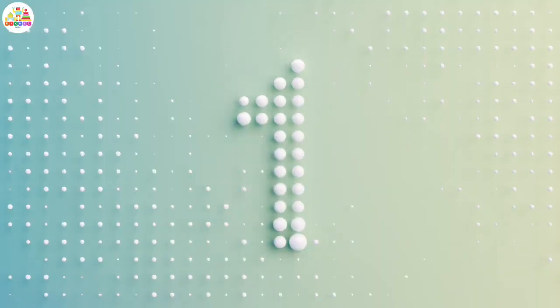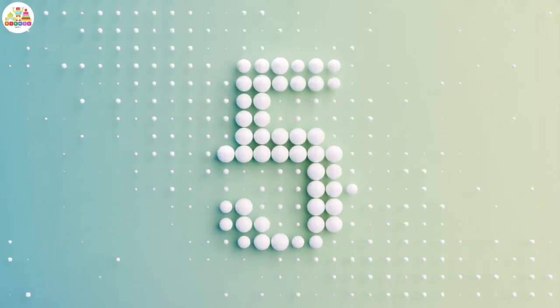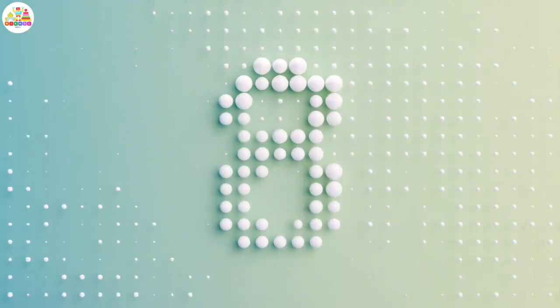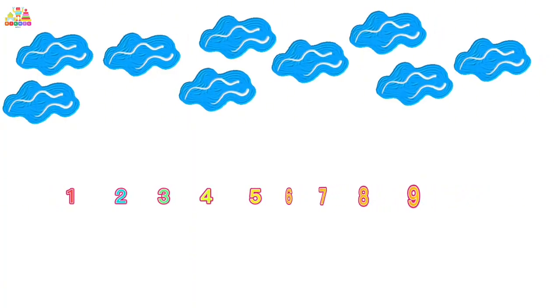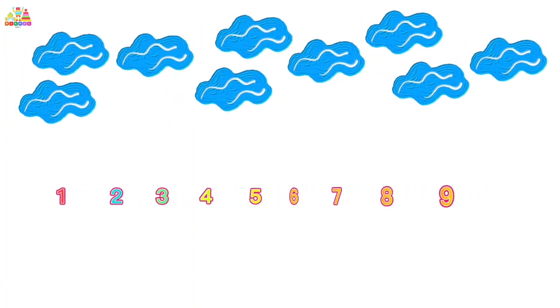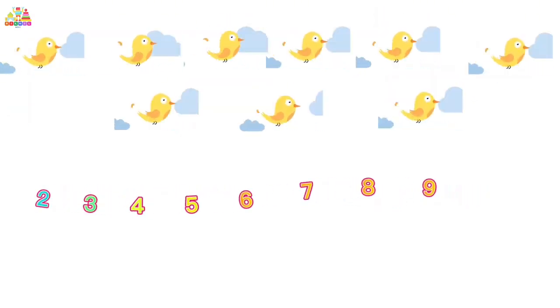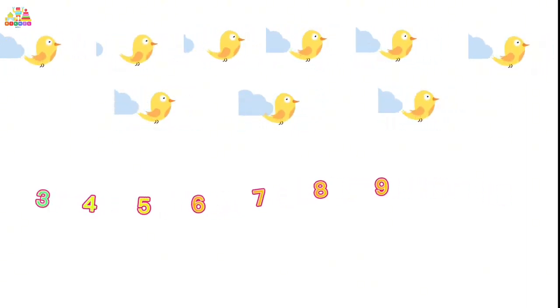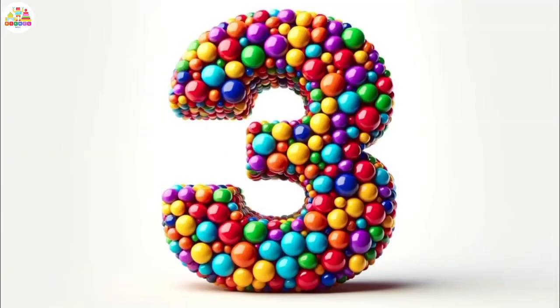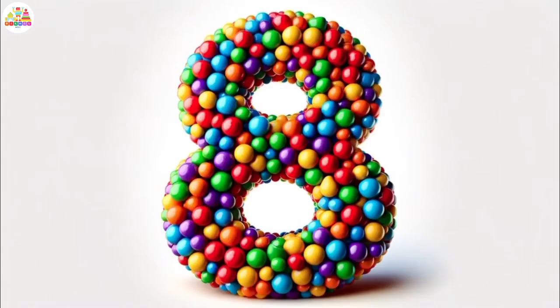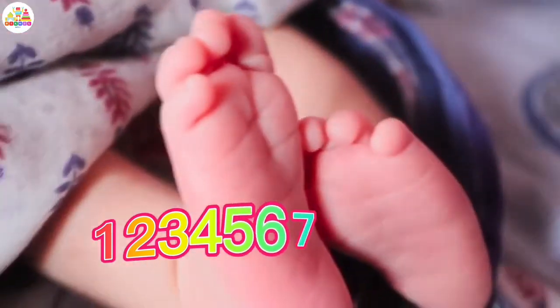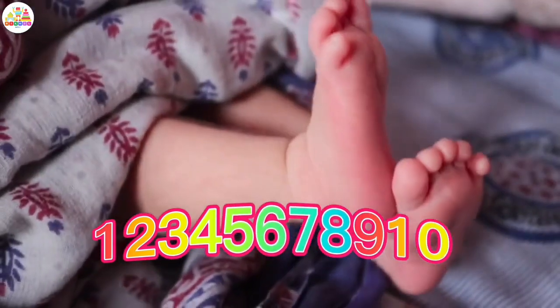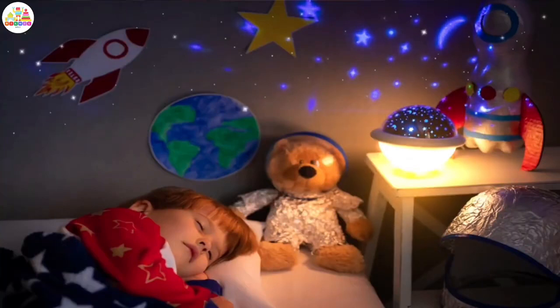Numbers, numbers, everywhere we see. From one to ten, come sing with me. Nine fluffy clouds floating in the sky, nine baby chicks chirping oh so high. Numbers, numbers, everywhere we see. From one to ten, come sing with me. Ten sleepy toes wiggling on the bed, time to close our eyes and stop going instead.